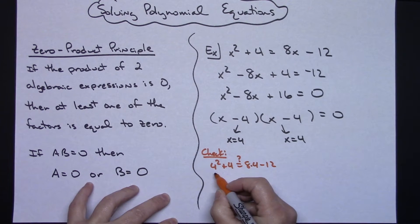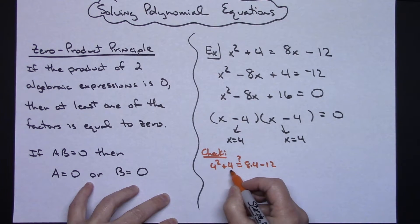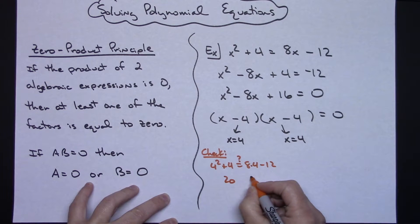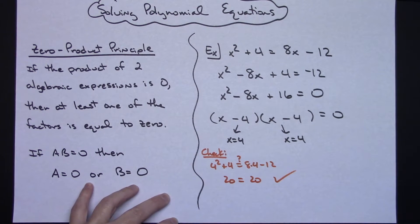If I work this out, I'd get 16 plus 4 on this side, which would give me a 20, and over here I'd have a 20 minus 12, which would also give me 20. So it definitely does check.